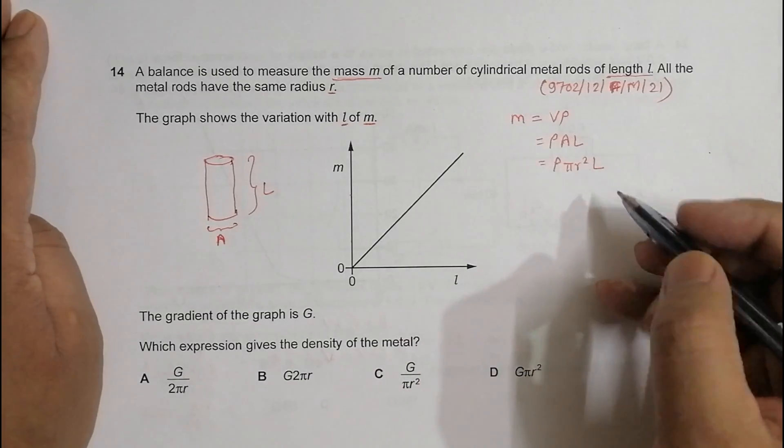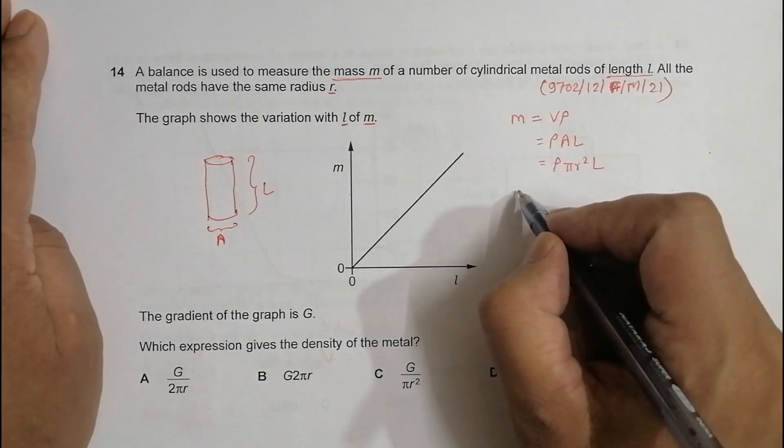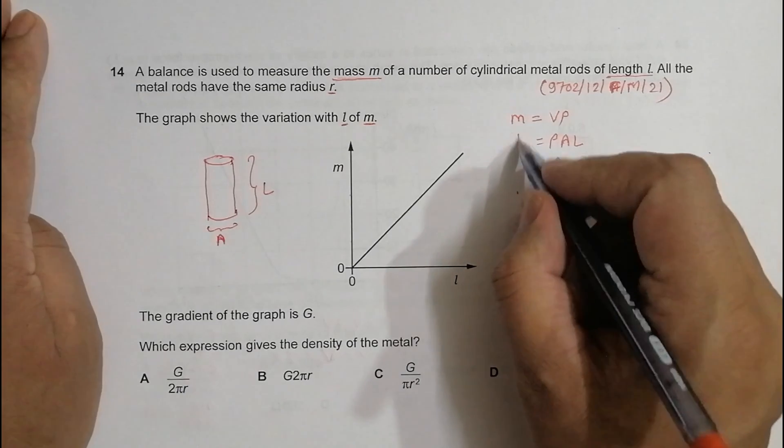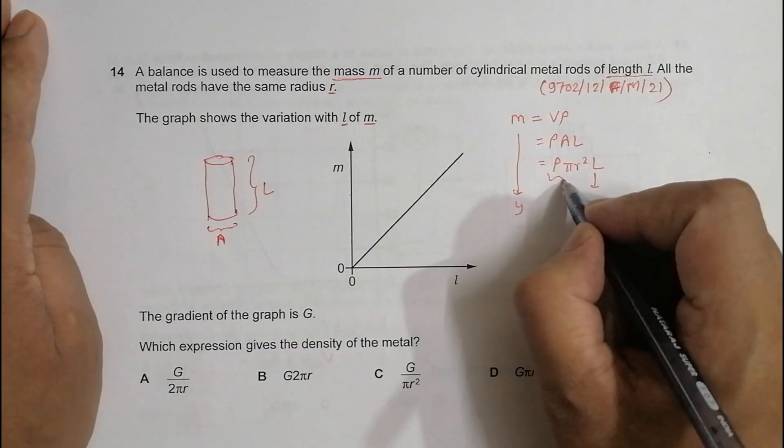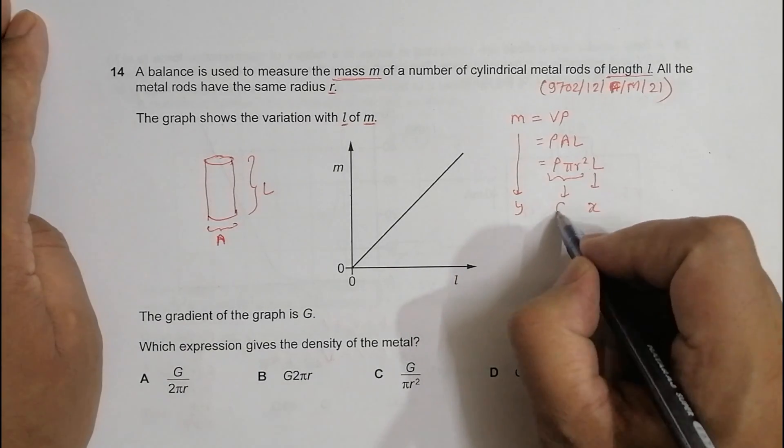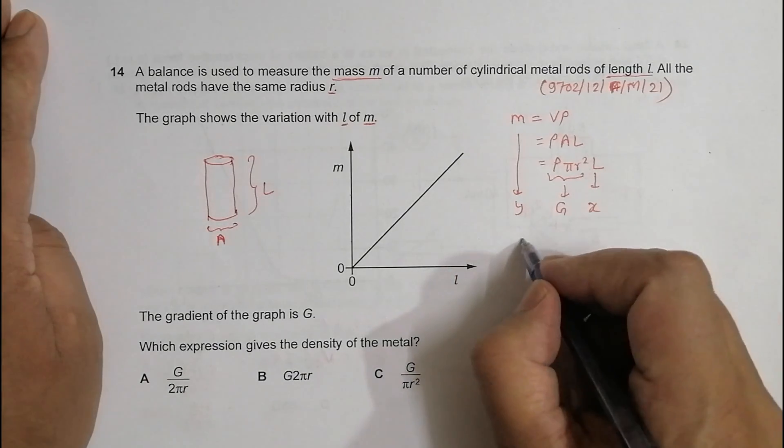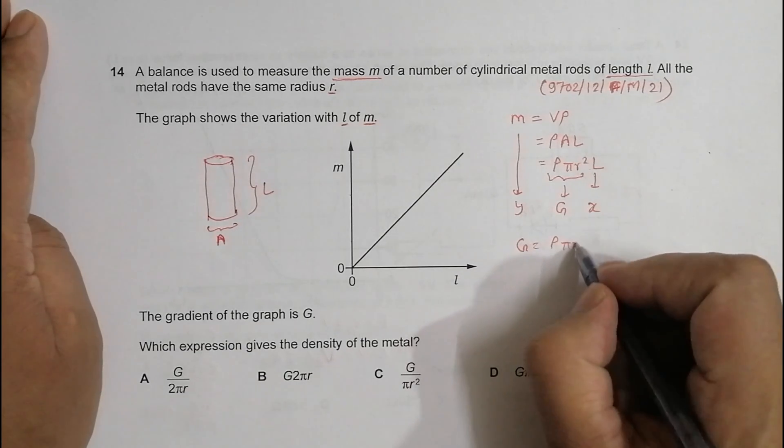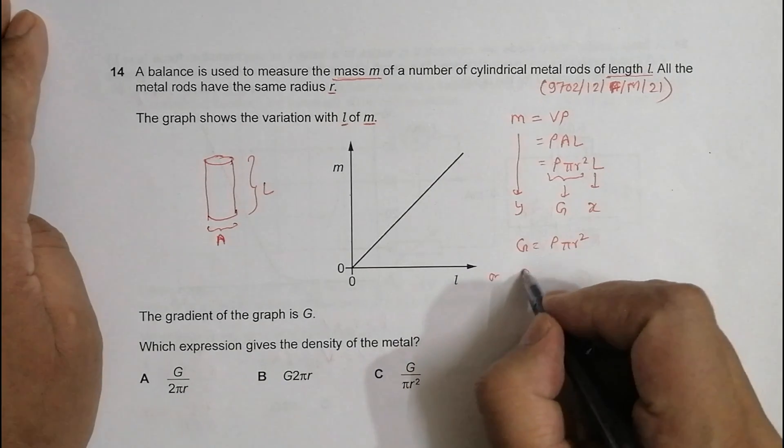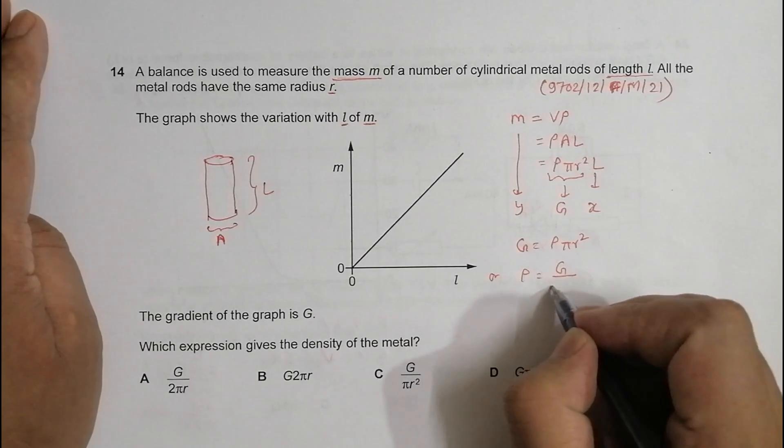So here we have drawn the graph for this thing in the y-axis, this thing in the x-axis. So this thing should be the gradient, so it should be G. So that's why G is equal to ρπR², which gives us ρ = G/(πR²).